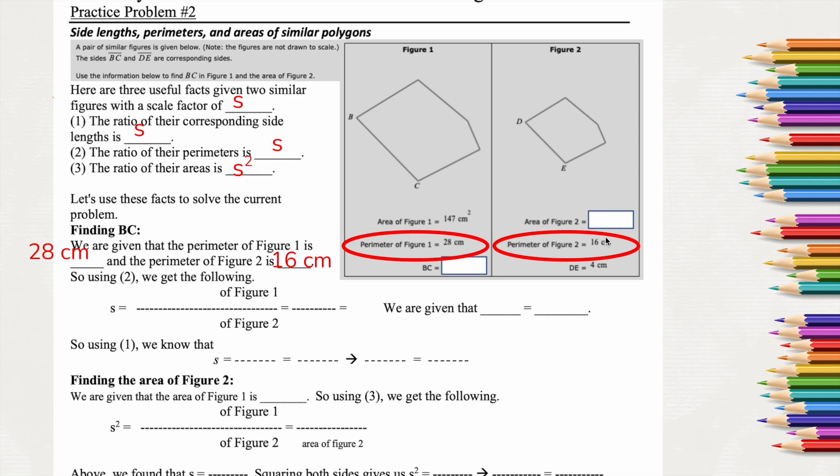We're either going to be given the area for both, the perimeter for both, or a length for both. So we need to find out which one we were given both. That's how we're going to calculate our scale factor. So using number 2 up here, we're going to calculate the scale factor because the perimeter is a basic length.